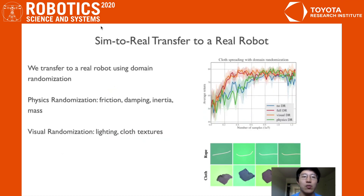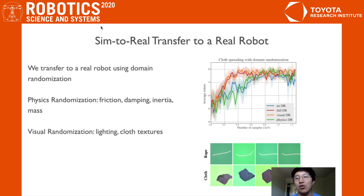In order to transfer to a real robot, we use sim-to-real transfer with domain randomization. We randomize physics such as friction, damping, inertia, and mass, as well as visual attributes such as lighting and cloth textures. On the right, we have some examples and results showing that we received much more benefit from visual domain randomization as opposed to physics domain randomization.